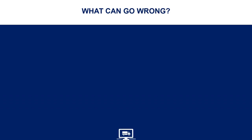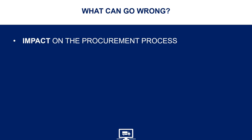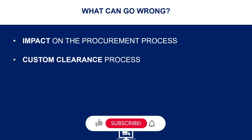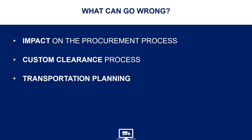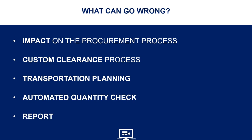What can go wrong? Let's suppose that you have issues during your item creation process. The impact on your supply chain operations can start during procurement when you are creating purchase orders. Then it can be followed by issues during transportation when facing customs clearance. Transportation planning can also be impacted if you have wrong weights or volumes. In the warehouse, issues arise if you are using tools like automated quantity checks using a scale. Finally, it will impact your reporting and analytics capability.